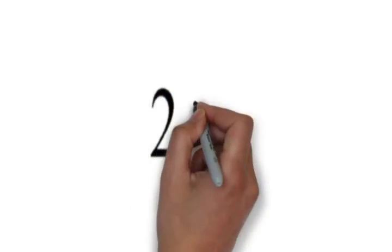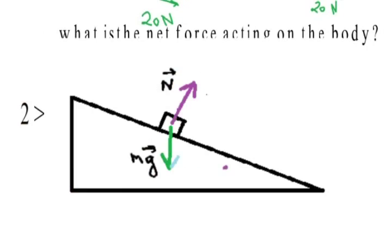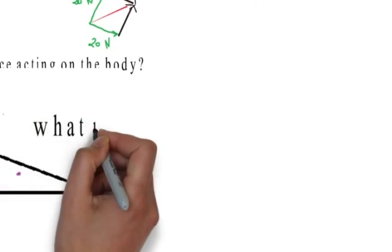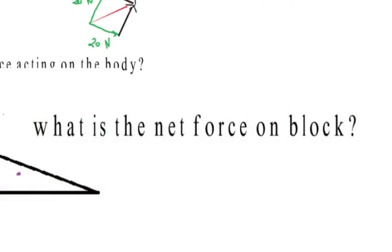In the second example, a block is kept on an inclined plane. Two forces, mg and normal reaction, are acting on the block. What will be the net force on the block?